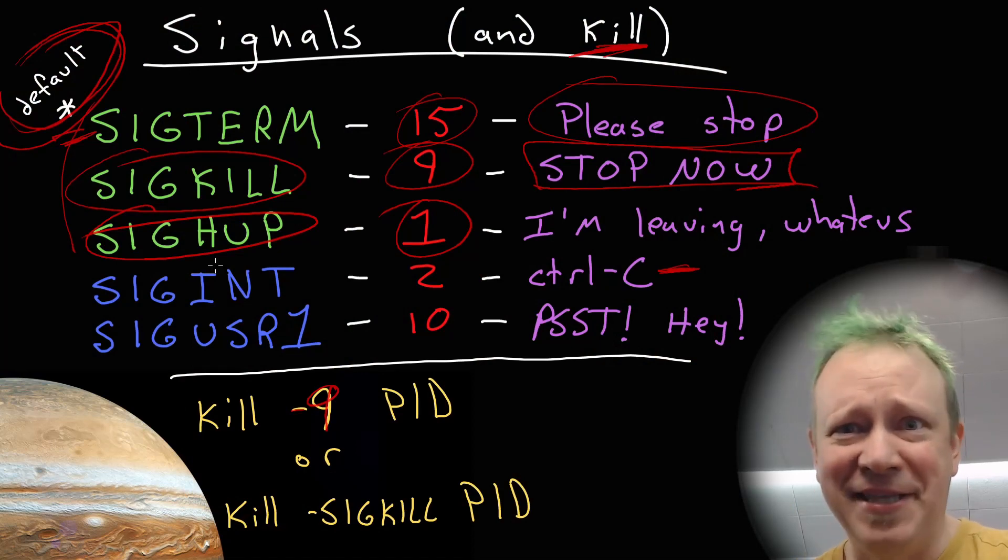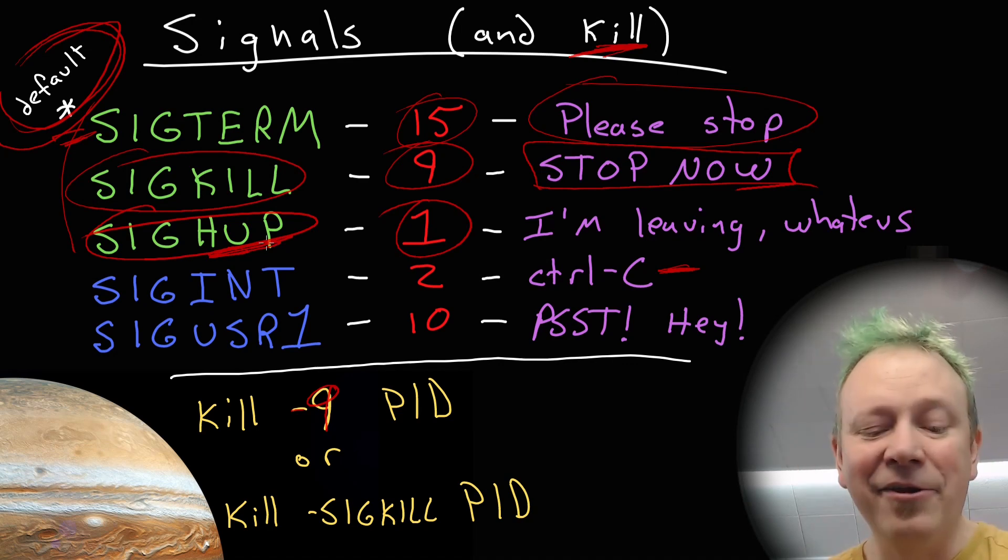But there are still some programs that if they receive a SIGHUP, they will terminate. And that's why the program NOHUP exists. So if you say NOHUP, like the program N-O-H-U-P, and then run a program, if that program by default will listen for a SIGHUP and then quit, if it receives that, if you run NOHUP, it'll never hear that signal. NOHUP blocks it. That's the frustrations around the SIGHUP and kind of how we got where we are today. I know that was a lot. I'm sorry. But that just drives me nuts that they kind of hijacked the whole meaning behind SIGHUP.